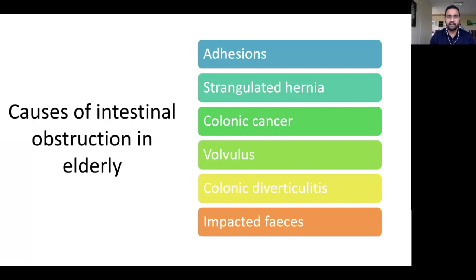To summarize: adhesion is the most common cause of small intestinal obstruction, while colonic cancer is the most common cause of large bowel obstruction. In clinical practice, when a patient presents, we assess common causes according to the patient's age group — neonate, infant, young adult, middle-aged, or elderly.